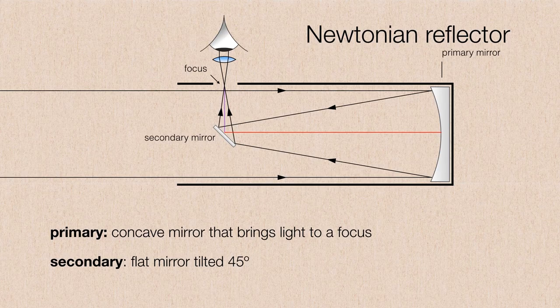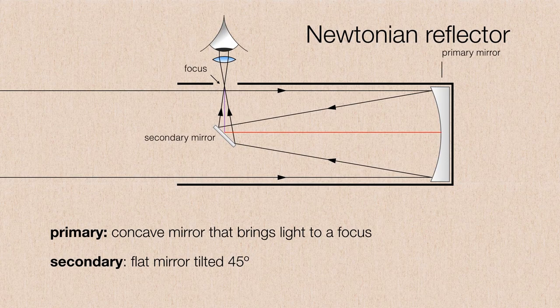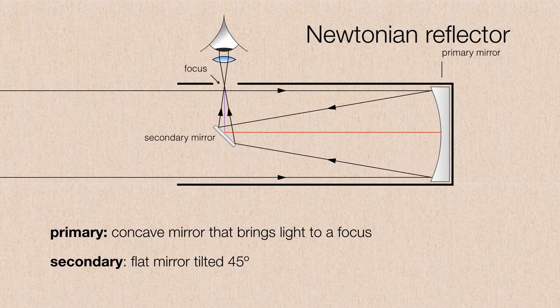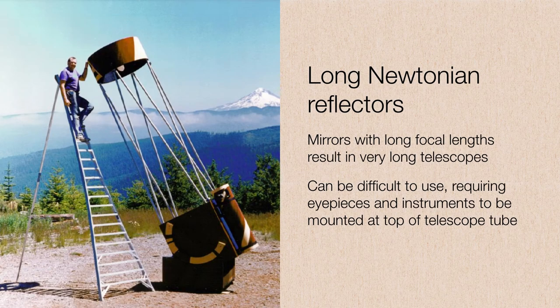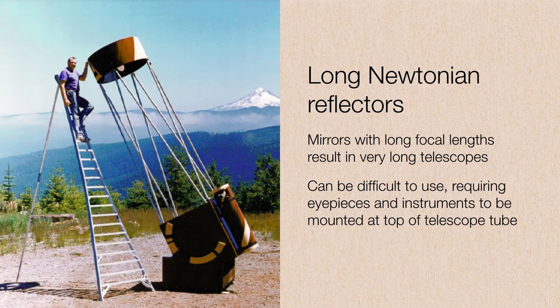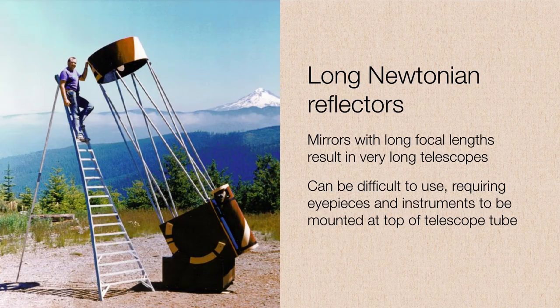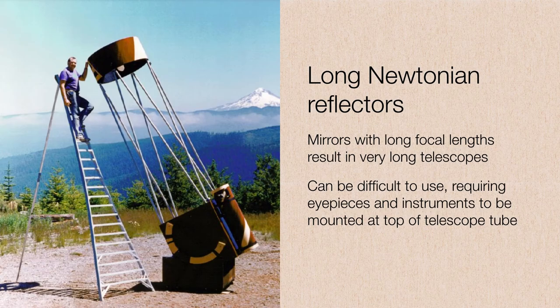A problem with Newtonian reflecting telescopes though, if you're going to build a telescope with this particular configuration, is that you may be running into a potential safety hazard if you built a telescope with a long focal length mirror. So you got to be a little careful in situations like this.